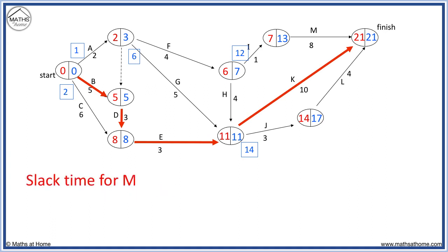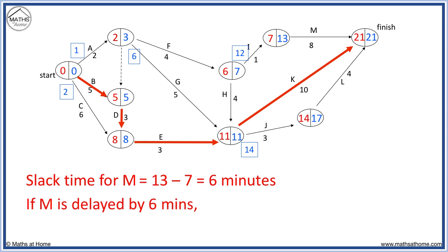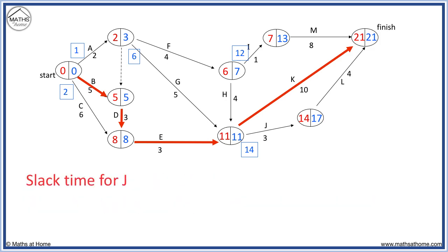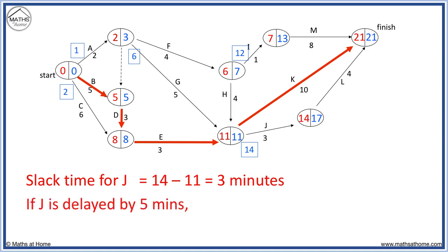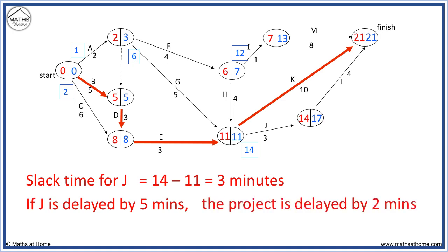The slack time for M is 13 minus 7, equals 6 minutes. Therefore if M is delayed by 6 minutes, the project is not delayed. The slack time for J is found by subtracting the number on the outside: 14 minus 11 equals 3 minutes. Therefore if J is delayed by 5 minutes, 2 minutes delay is fine, but the other 3 minutes will be added on to the completion time to make 23 minutes.